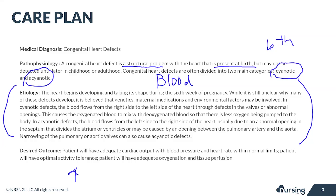These are super important concepts to understand, so read through this information and it will build on that. The desired outcomes for patients with congenital heart defects are: first, that they will have adequate cardiac output, which will help them have normal blood pressure and heart rate. Second, we want optimal activity tolerance. And third, we'll be monitoring for adequate oxygenation and tissue perfusion.